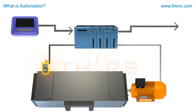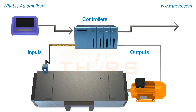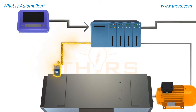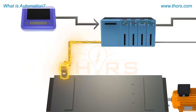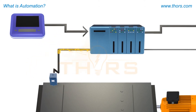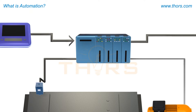Automating a process requires three fundamental pieces: controllers, inputs, and outputs. First, the automation system must be able to sense what is happening with the product or machinery and bring that information into a specialized computer called a controller.